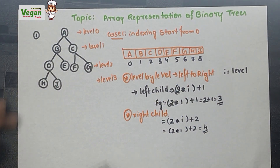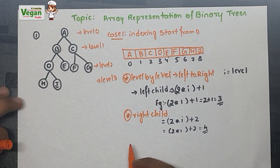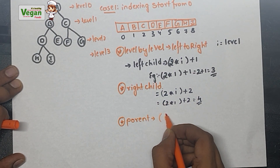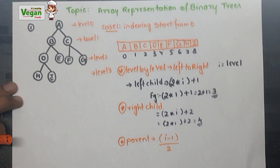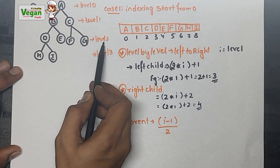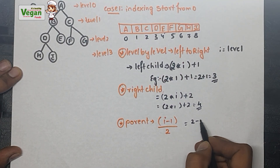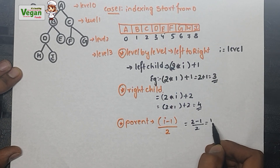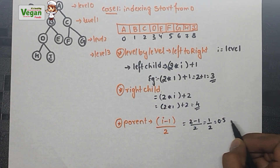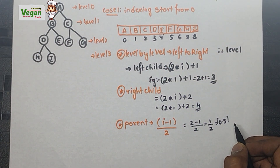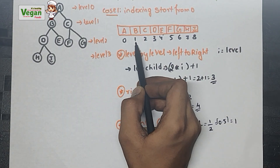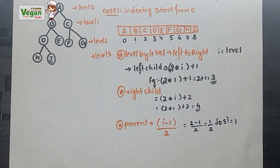To find the parent of a child node, the formula is floor((i - 1) / 2). For example, to find the parent of D: D is at index 2, so (2 - 1) / 2 = 0.5. Taking the upper limit (ceiling) gives 1, and index 1 is B. So B is the parent of D.